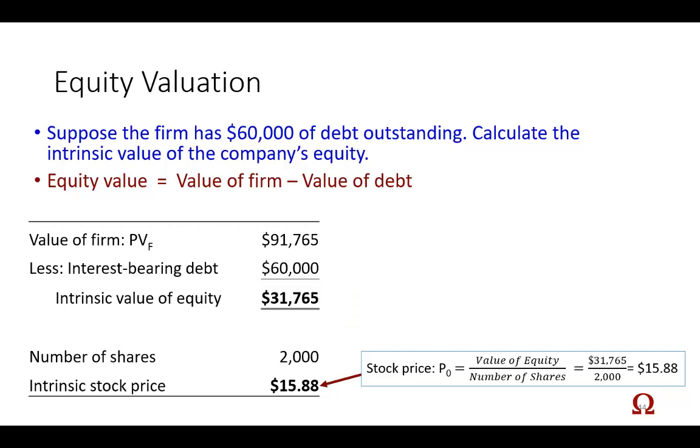So, to wrap this up, what can we do when we know what the intrinsic value of the firm is? Well, it would be to then determine what the intrinsic value of the firm's equity is, because as you know, equity is the basic ownership of the firm. And so, an equity holder has the residual claim on the firm. So, if you want to buy a firm, you're going to have to be the common equity holder. So, in this example, let's say the firm has $60,000 of debt.